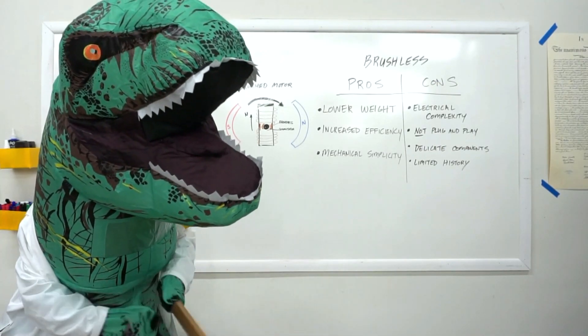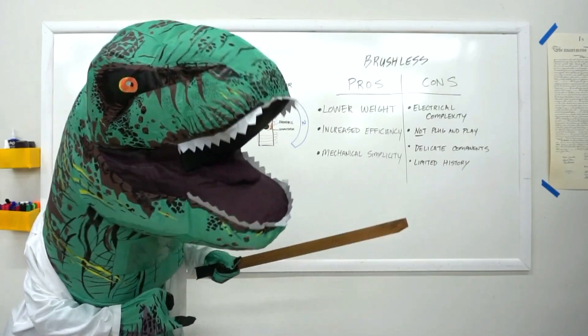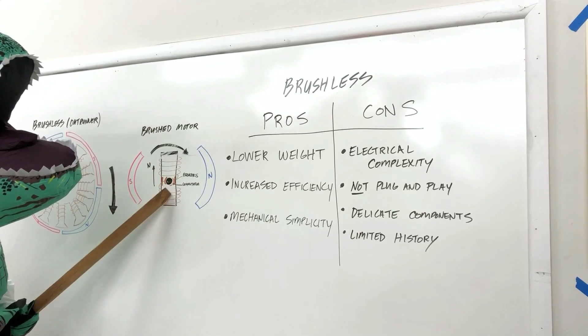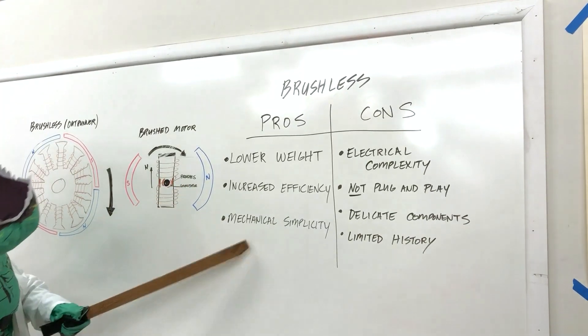Because they don't have brushes and commutators like brushed motors do, brushless motors are mechanically simpler with less points of failure within the motor.